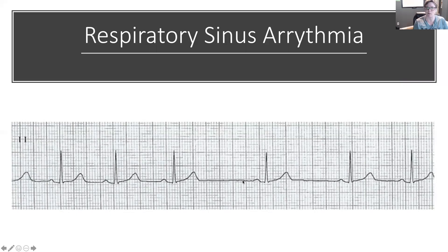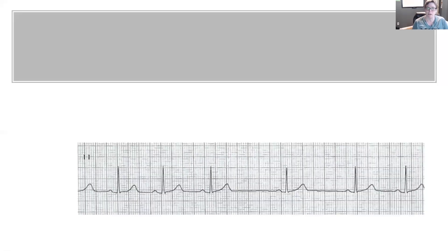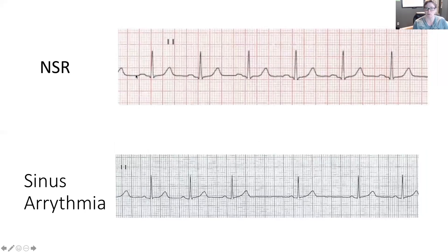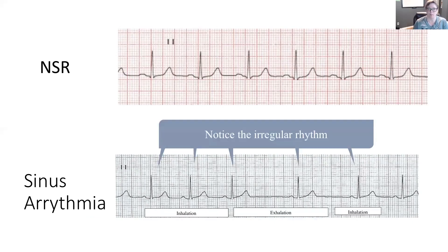That gap could be several things, which is why we do our analysis. Comparing to a normal sinus rhythm on top — carrying along like clockwork — versus the sinus arrhythmia below, which speeds up, then slows, then speeds up again. Notice the irregular rhythm: this is the hallmark of a respiratory sinus arrhythmia. All other parameters will be normal except for that irregular rhythm. You'll see inhalation correlates with increased heart rate and exhalation with decreased heart rate; measured R-to-R intervals within each phase will be very similar or the same.